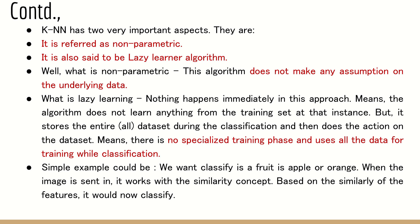There are two very important aspects of KNN to understand. First, it is referred to as non-parametric — this algorithm does not make any assumption on the data. Second, it is a lazy learner algorithm, meaning there is no separate specialized training phase. This algorithm uses all the data for training while classification happens, so it is called lazy because there is no specialized training phase.